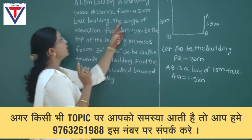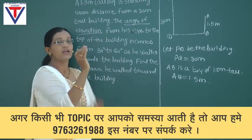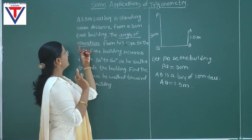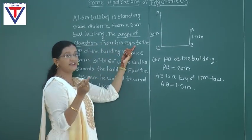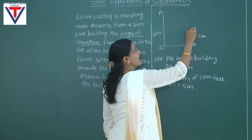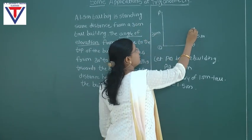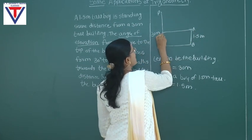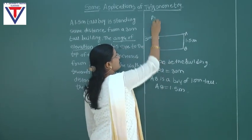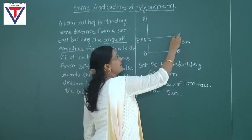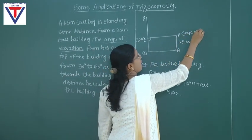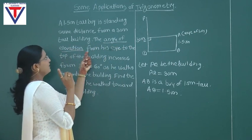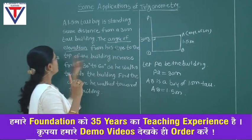Now, what is given is the angle of elevation from his eye. The position of the eye will be at point A. If he is standing here, you will have to draw a horizontal line first. AC is the horizontal line and AC is perpendicular to PQ. His eye position will remain at A. The angle of elevation is from his eye, i.e., from AC to the top of the building.